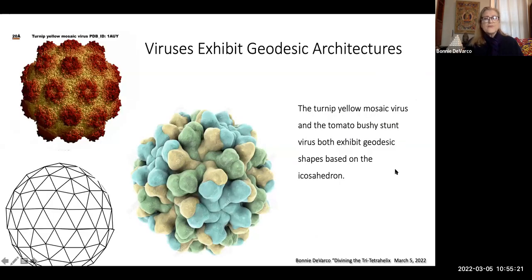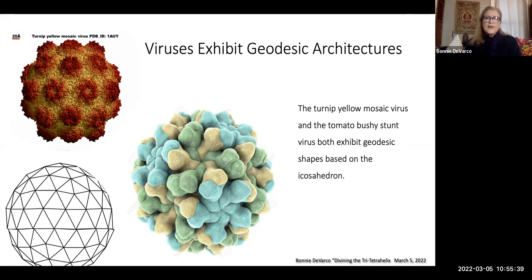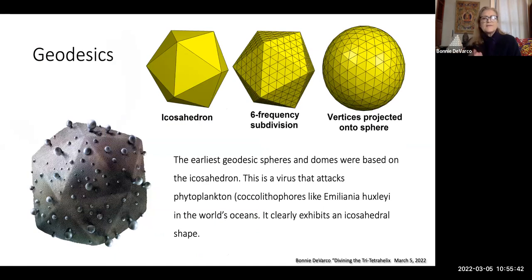Viruses also exhibit geodesic architectures. The turnip yellow mosaic virus and tomato bushy stunt virus both exhibit geodesic shapes based on the icosahedron. Even for Emiliania Huxley, viruses that are attacking it actually exhibit much more clearly the icosahedral shape.